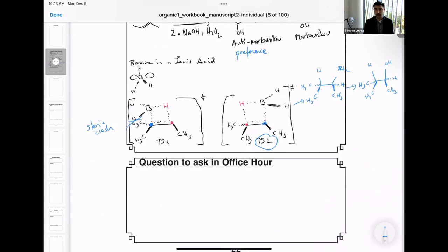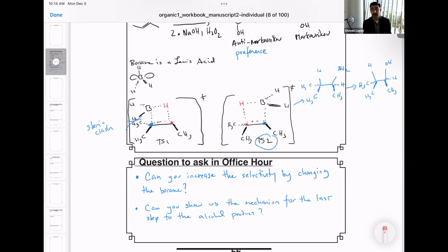Let's talk about some questions we can ask in office hours. One, can you increase the selectivity by changing the borane? Can we do that with increasing the steric size of the molecule? Can we increase or decrease the selectivity based on different groups? Like if we put a functional group, like an alcohol, or if we put an electron withdrawing group, like cyano. Two, can you show us the mechanism for the last step to the alcohol part? There might be more time for your professor to describe that mechanism in office hours.